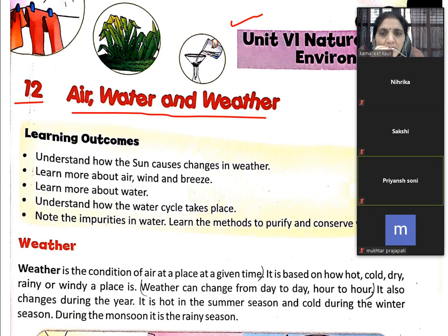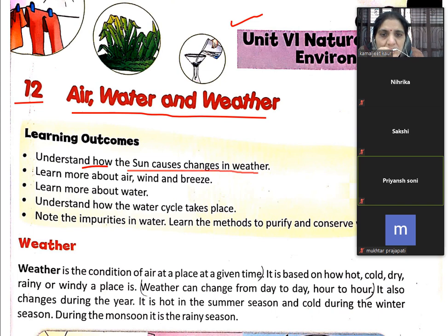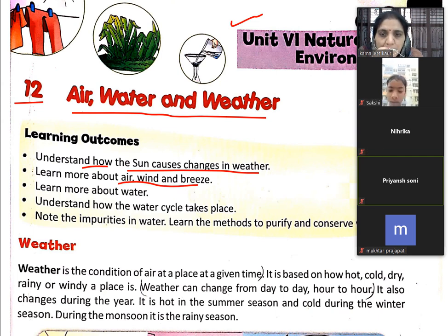Air and water affect weather. In this chapter we read: the sun causes changes in weather; air, wind and breeze; we learn more about water cycle, impurities in water, and the method to purify water.